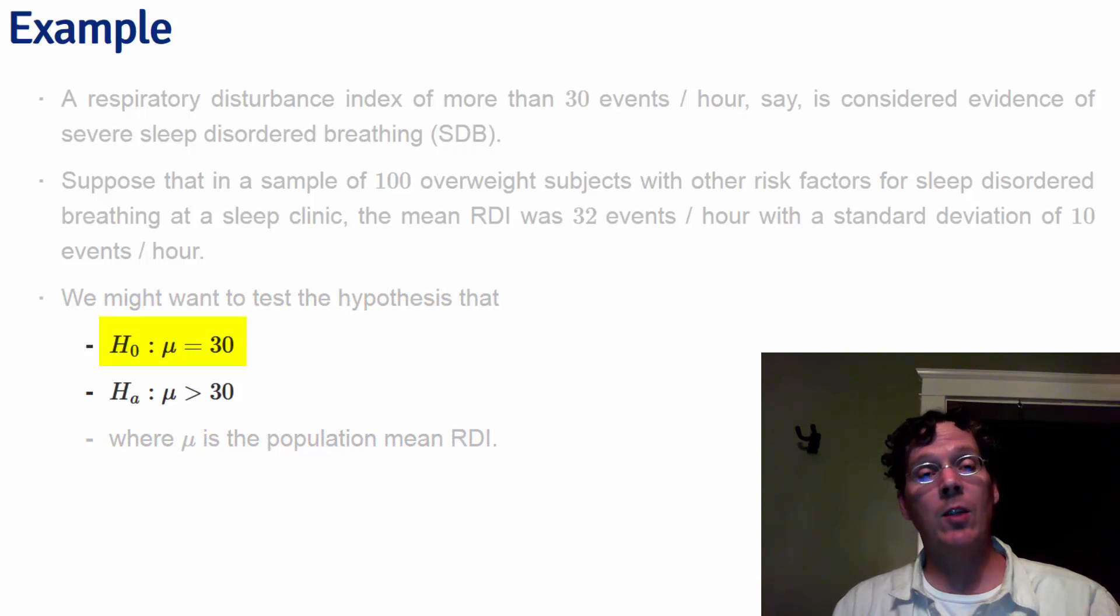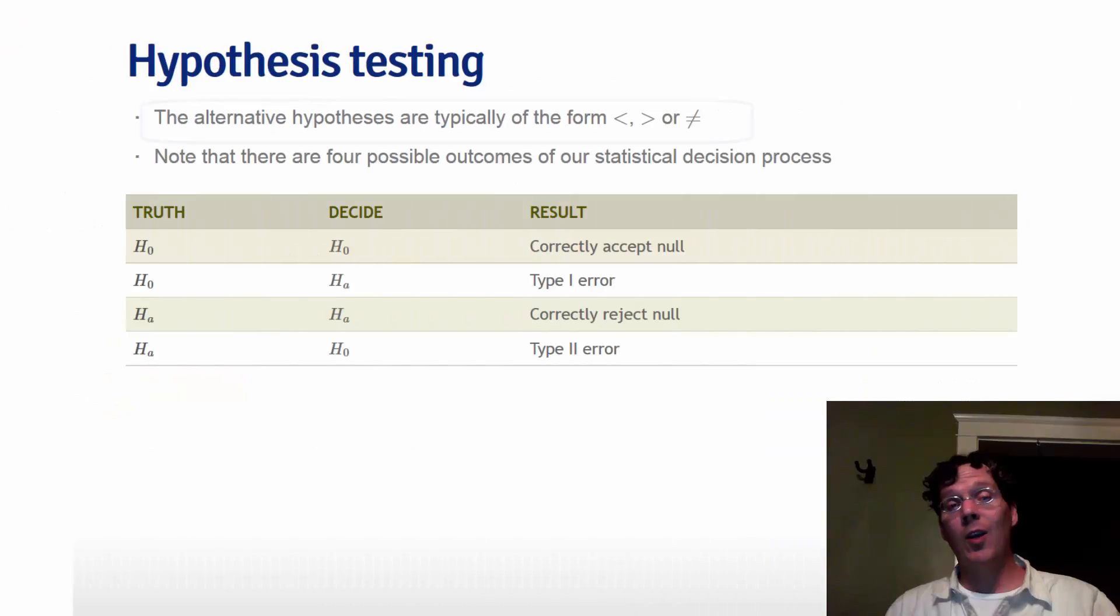So we specify H₀: μ = 30, and the alternative hypothesis Hₐ: μ > 30. In our example, we specified Hₐ that μ was greater than 30.